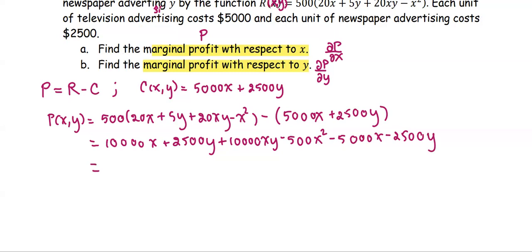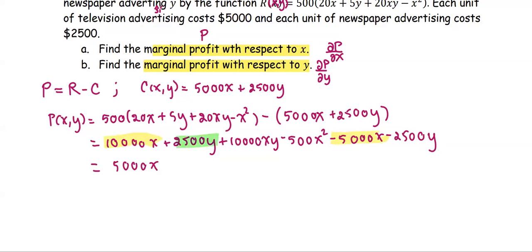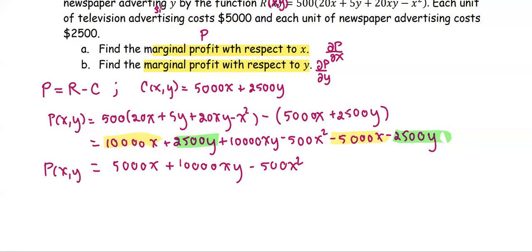Now we simplify by collecting like terms. For the x terms: 10,000x − 5,000x = 5,000x. For the y terms: 2,500y − 2,500y = 0, so they cancel out. Collecting the remaining terms, the simplified profit function is P(x,y) = 5,000x + 10,000xy − 500x².